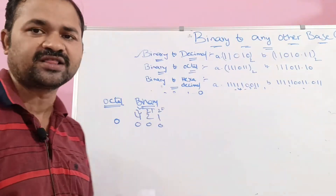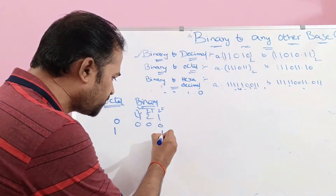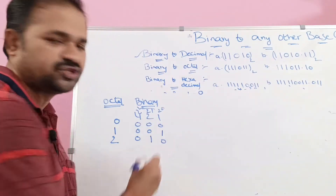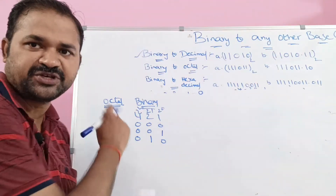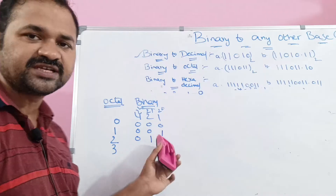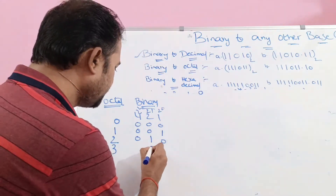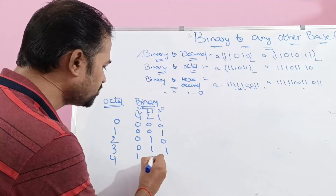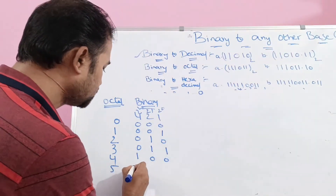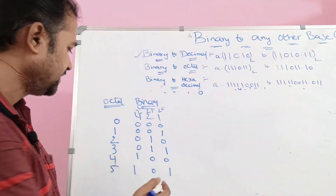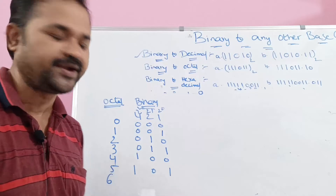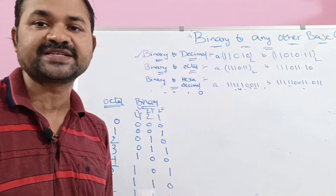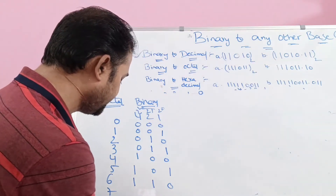The octal digits 0–7 in 3-bit binary notation: 0 = 000, 1 = 001, 2 = 010, 3 = 011 (sum of 2 and 1), 4 = 100, 5 = 101 (sum of 4 and 1), 6 = 110 (sum of 4 and 2), 7 = 111 (all 1s, sum of 4+2+1).